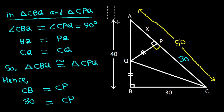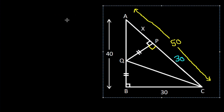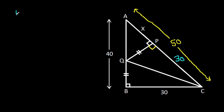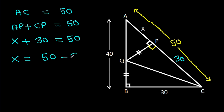And we have AC is 50, and AC is AP minus CP equals 50. AP is X, and CP is 30, so X minus 30 equals 50. Therefore, X will be 50 minus 30, so X is 20.